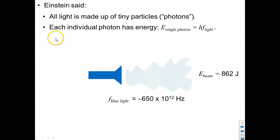And Einstein said that each individual photon has an energy equal to h, Planck's constant, times the frequency of the light. So for this blue light, we can calculate, using this equation, the energy of each photon in this blue light.